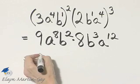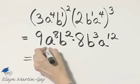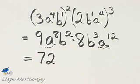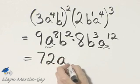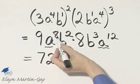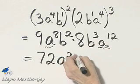9 times 8, that's 72. And then this factor and that factor I can put together. I can multiply. That would be the base of A raised to the power of 8 plus 12, or 20.